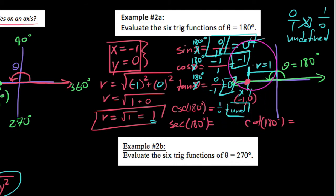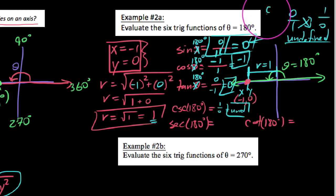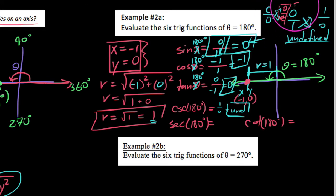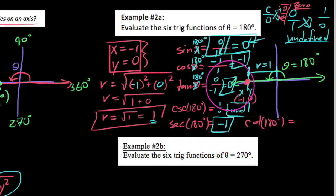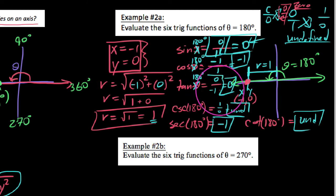If sine equals zero, the reciprocal of zero is always undefined. What is the reciprocal of undefined? Anything undefined is some constant C over zero. Flipping it back gives zero over C, and zero divided by anything equals zero. So the reciprocal of undefined is always zero, and the reciprocal of zero is always undefined. Secant of 180 is the reciprocal of negative one, which is negative one. Cotangent of 180: tangent was zero, so cotangent is undefined — we can verify by flipping y over x to get negative one over zero, which is undefined.